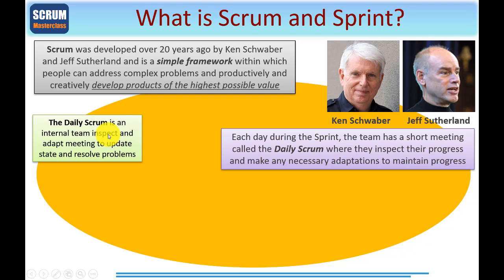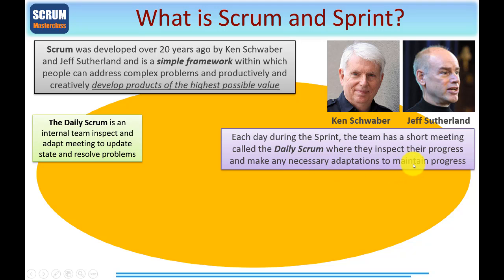We learned about Sprints in the last module, and the Daily Scrum. This is an internal team — the development team — inspect and adapt meeting to update the state of development and to resolve any problems. The key words here are inspect and adapt, which is a watchword for Scrum. A Daily Scrum occurs each day during the Sprint. So if a Sprint is lasting five days, you'll have five Daily Scrum meetings. The team has a short meeting where they inspect their progress and make any necessary adaptations to maintain that progress — that's your inspect and adapt right there.